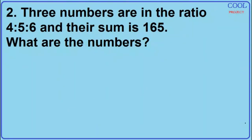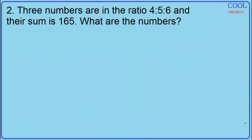Number 2: 3 numbers are in the ratio 4 is to 5 is to 6, and their sum is 165. What are the numbers? Solution.